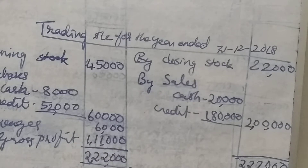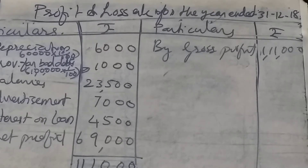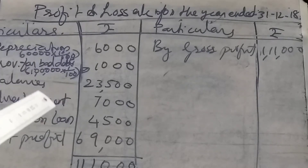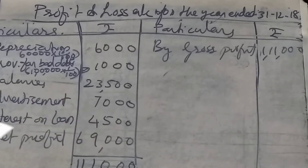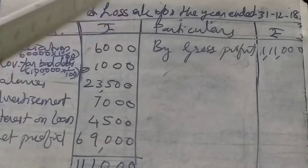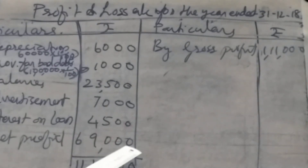This 1,11,000 goes to the profit and loss account. Now we can prepare the profit and loss account for the year ending. First item: depreciation — 10% on 60,000 is 6,000. Provision for bad debts: 1% on 1,00,000 is 1,000. Salary: 23,500. Advertisement: 7,000. Interest on loan: 4,500. Gross profit from trading account: 1,11,000 transferred to profit and loss account. The balance gives a net profit of 69,000.